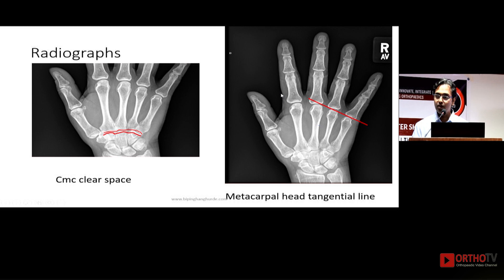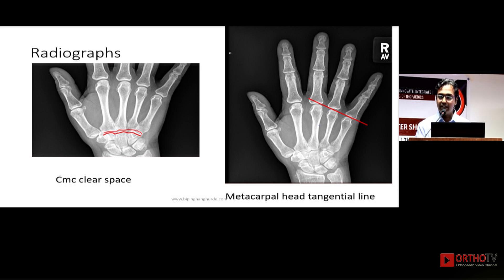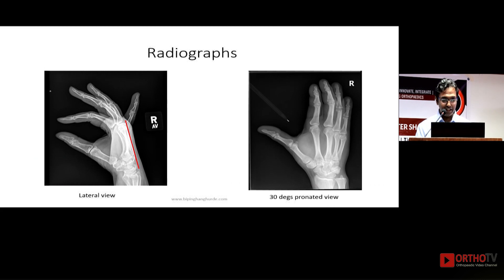Another important thing is the metacarpal head tangential line. Always draw a line along the tangential of the third, fourth, and fifth metacarpals. The most commonly missed one is the fifth, because those who don't look at hand X-rays very often will see that everything looks normal.